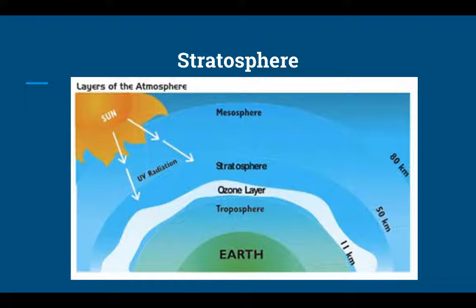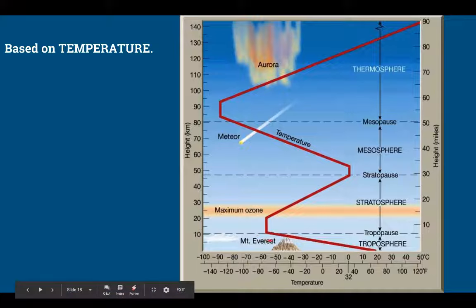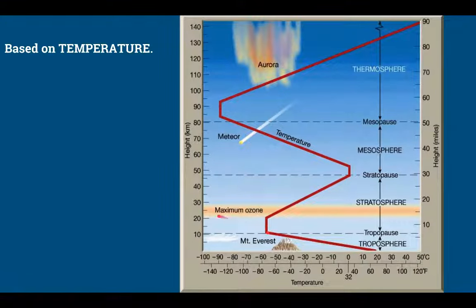You may have noticed in your graph, as you hit about 15 to 20 kilometers up, instead of getting colder, the temperatures in our atmosphere start to warm up. This is the main reason - in the stratosphere we have maximum ozone. The ozone that protects us from UV rays is in the stratosphere.